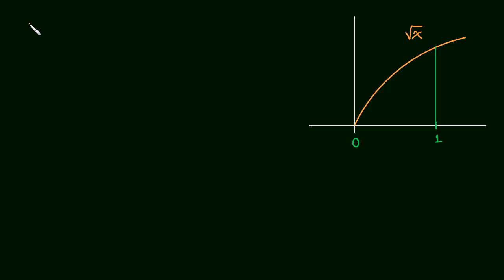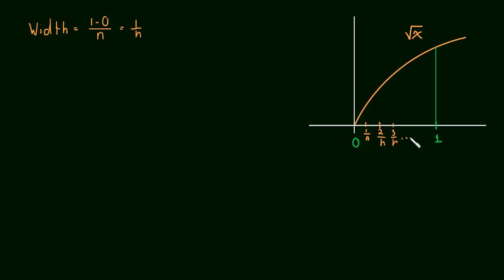If we started this normally — and you'll see that's a bad idea — we would take the length of the total interval divided by the number of rectangles. This would be the width of each rectangle: 1 over n. So we would have the first x value at 1 over n, then 2 over n, 3 over n, all the way until n over n, which is just 1, our last rectangle. Then we would find a formula for the heights, which is just i over n.